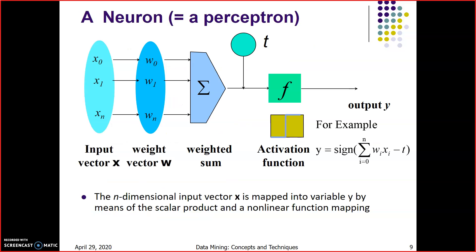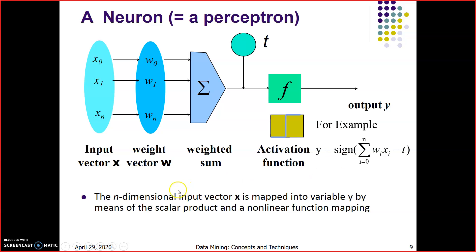What is a natural neuron? A biological neuron is equal to a perceptron in ANN. Here we can see the input vector is capital X having values X0, X1 up to Xn. And there are some weights — capital W vector having W0, W1 up to Wn. Then this is the weighted sum sigma of all the weights. T is the time stamp or bias input. Then this is the activation function and it is the output. Activation function can be a sigmoid function: sigma running from 0 to n of Wi*xi minus t. The n-dimensional input vector X is mapped into variable Y by means of a scalar product and a non-linear function.